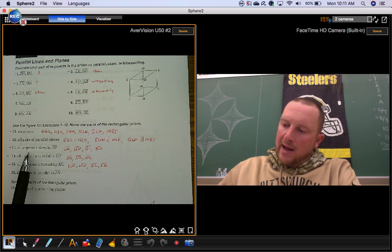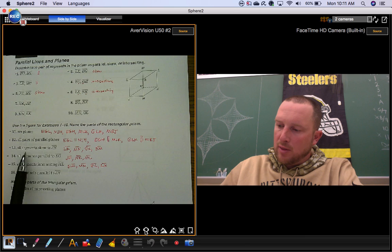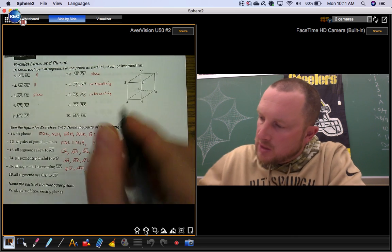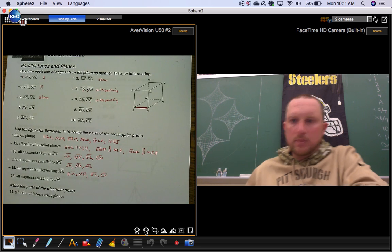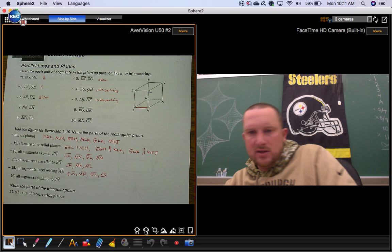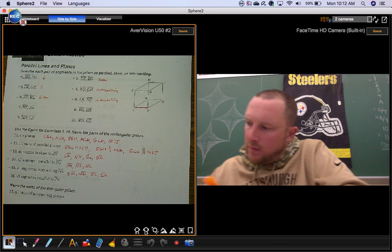We'll go back, now that we've used this diagram enough, and we'll look at this number 13 again. I'm going to show you a different way to do it. All segments skew to segment JH. So we're talking about that segment. Skewed segments are segments that don't touch. So you can cross off all the ones that touch it.